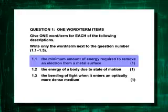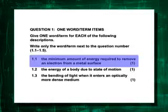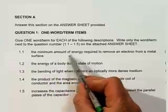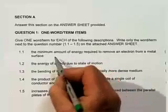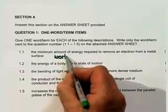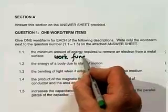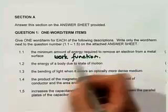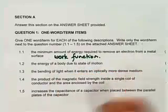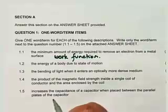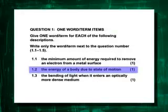to remove an electron from a metal surface. We know that this can be done with light, as in the photoelectric effect — it could also be done with heat — but the point is that that minimum amount of energy has the same name for both processes and it is the work function. In other words, how much work do you have to do to get rid of the electron from the surface.